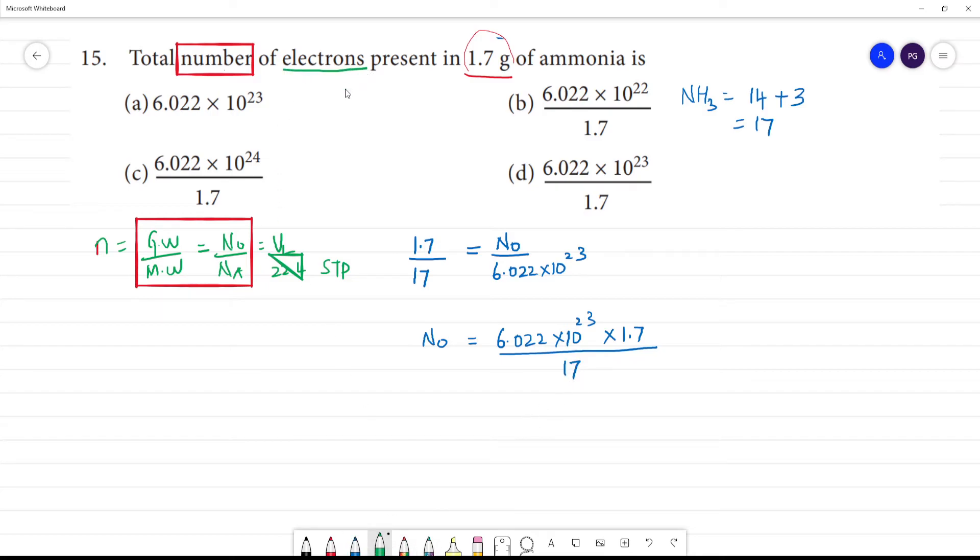How many electrons are in ammonia? Nitrogen has atomic number 7, so 7 electrons. Hydrogen has atomic number 1, and there are 3 hydrogens, so 3 electrons. Total number of electrons is 10, so multiply by 10.